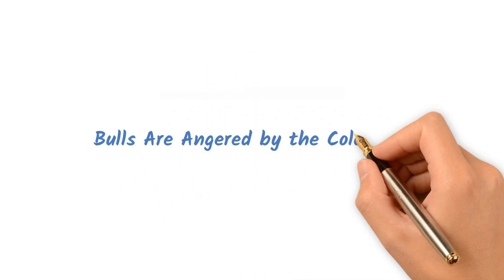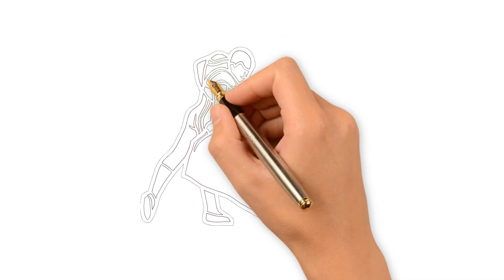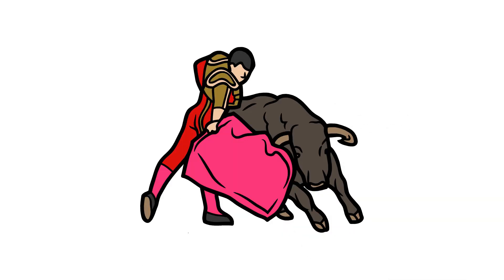Bulls are angered by the color red. Bulls, like most colorblind mammals, have limited color vision. They're more likely to react to movement and aggression in the matador, not the red cloth itself.